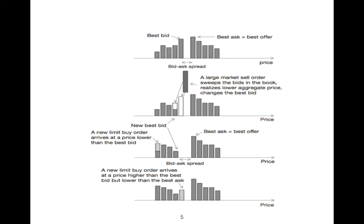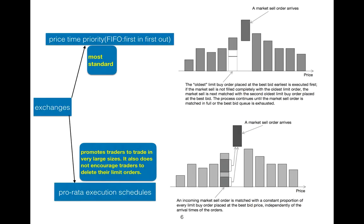We have different kinds of exchanges. The most standard exchange is based on price-time priority, first-in-first-out. The oldest limit buy order placed at the best bid—the earliest—is executed first. We also have pro-rata execution schedules.